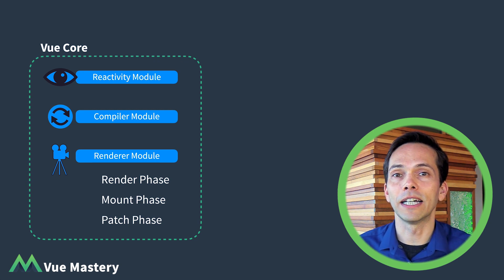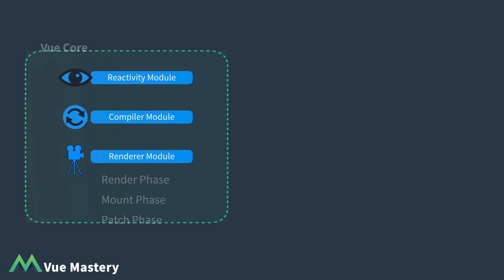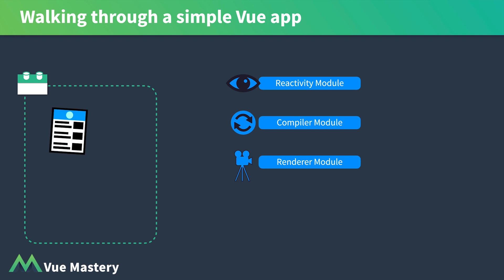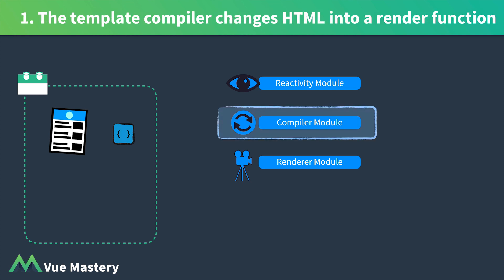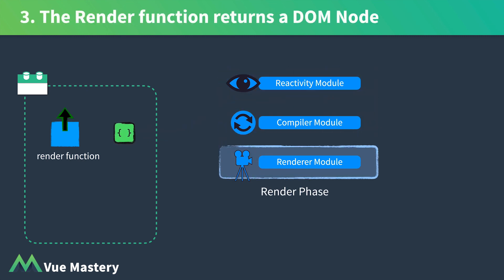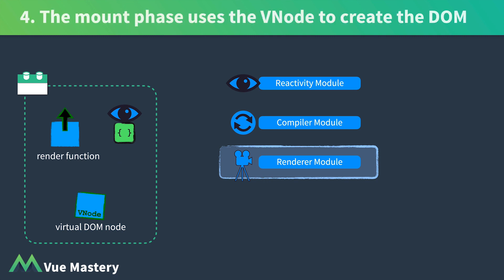Now let's dive into an example and look at the execution of a simple component. Here you can see a simple component with a template and a reactive object which is used inside the template. First, the template compiler changes the HTML into a render function. Then the reactive objects are initialized using the reactivity module. Next, inside the renderer module, we enter the render phase — this invokes the render function which references the reactive object. We now watch this reactive object for changes, and the render function returns a virtual DOM node. In the mount phase, the mount function is called, using the virtual DOM node to create the web page.